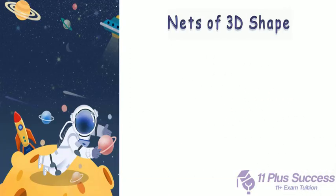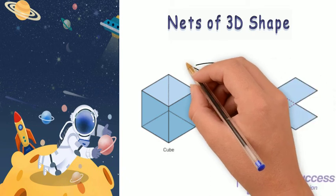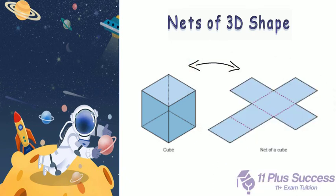Nets of 3D shapes. A net is what a 3D shape would look like if it were opened out flat. The net of a solid is a 2D figure that can be folded to form the 3D solid.